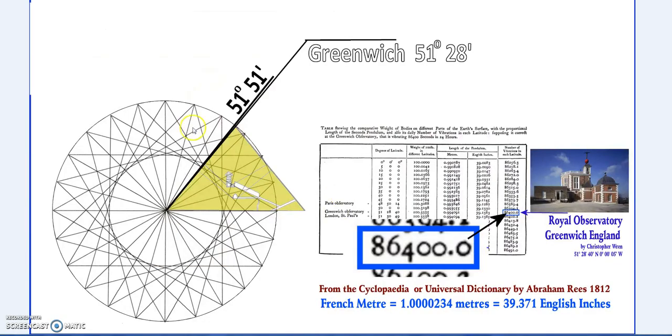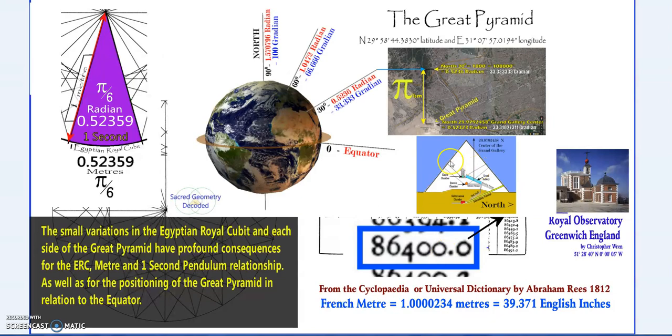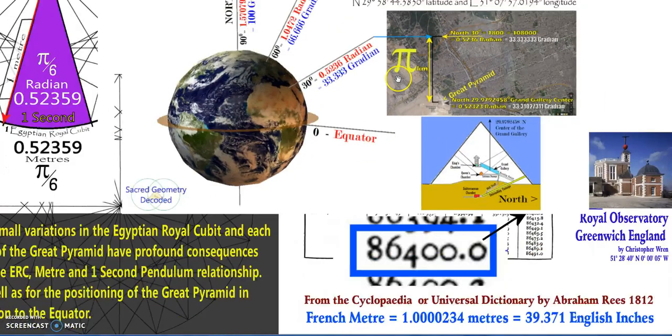The pendulum effect. It just so happens that the angle of the pyramid and Greenwich have this nice connection. The small variations pointed out in each side of the great pyramid and how it affects the actual cubit rather than the averages has profound implications for this meter-second pendulum relationship.